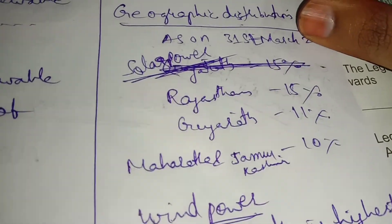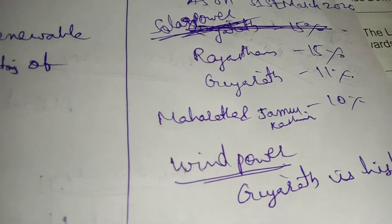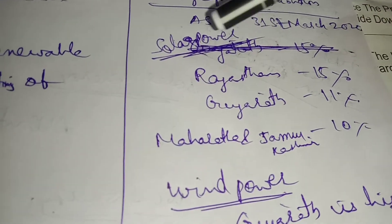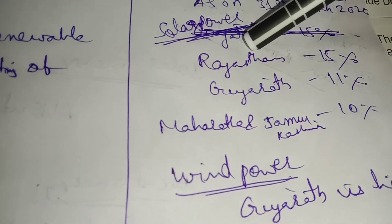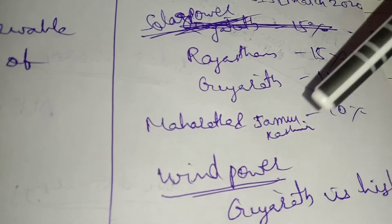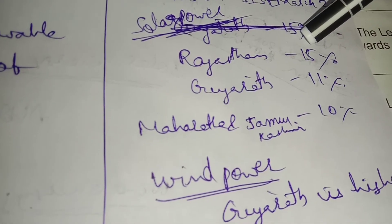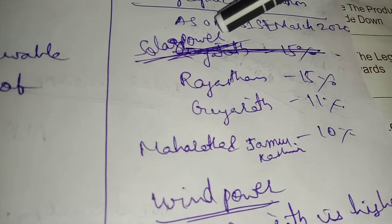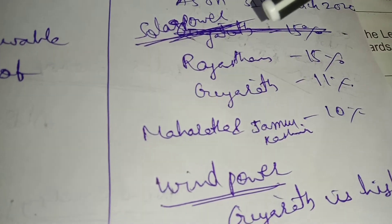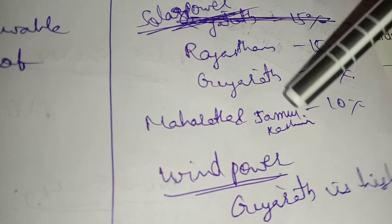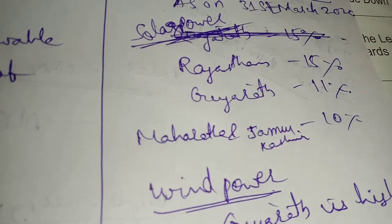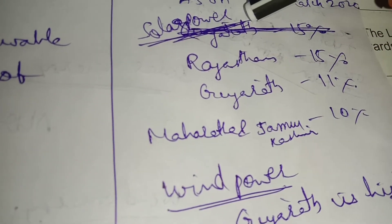As of 31st March 2020, Rajasthan produces solar power in first place. The next place is Gujarat, and the next is Maharashtra and Jammu Kashmir. Rajasthan produces 15% of solar power. First place: Rajasthan. Second place: Gujarat. Third place: both Maharashtra and Jammu Kashmir, each producing 10% of solar power.